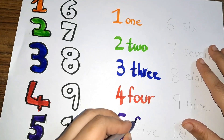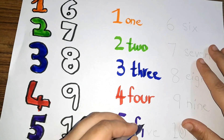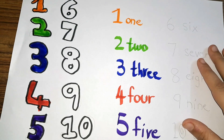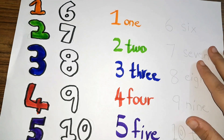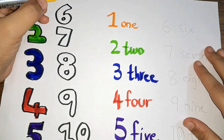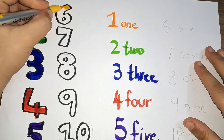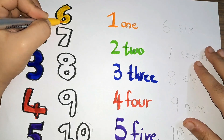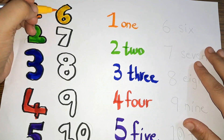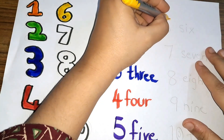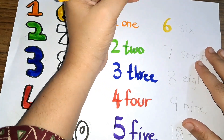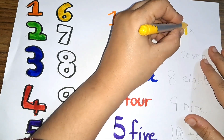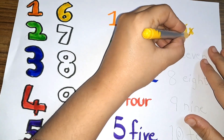Then, what comes after four? Five. We will color it with purple color. Number five — what is the spelling of five? F-I-V-E, 5. Then we have number six — we will color it with yellow color.